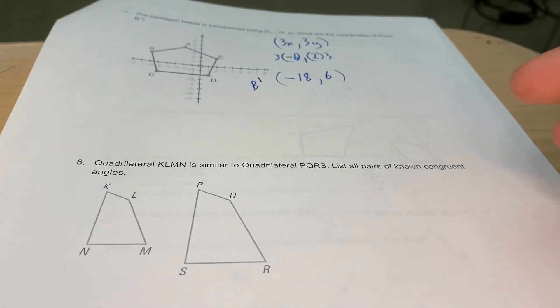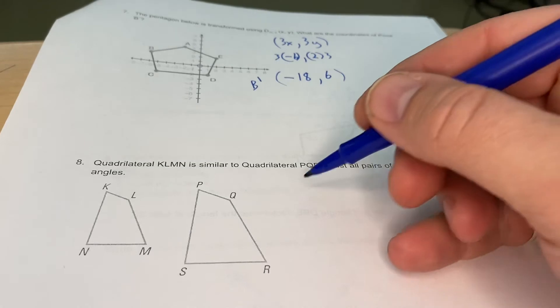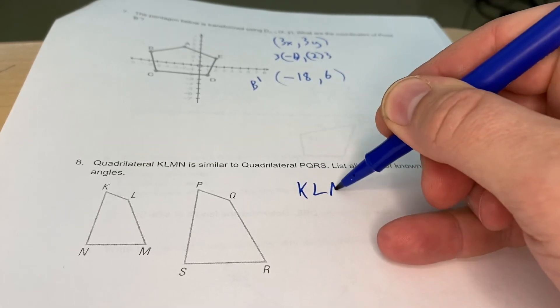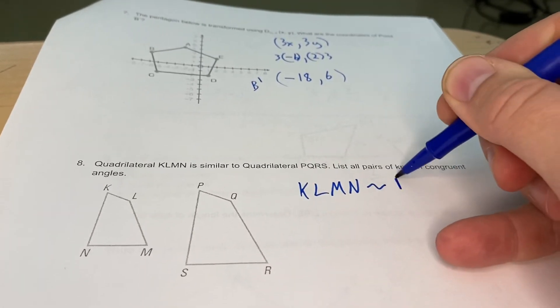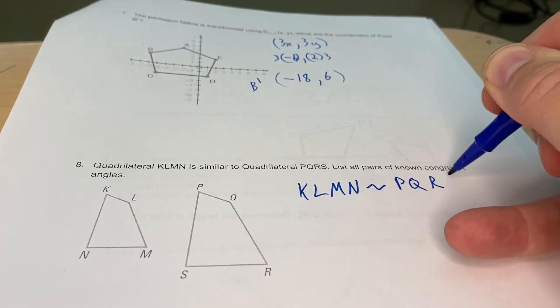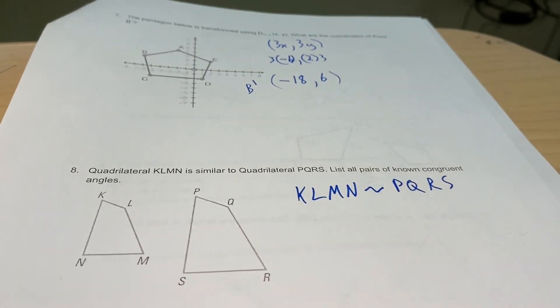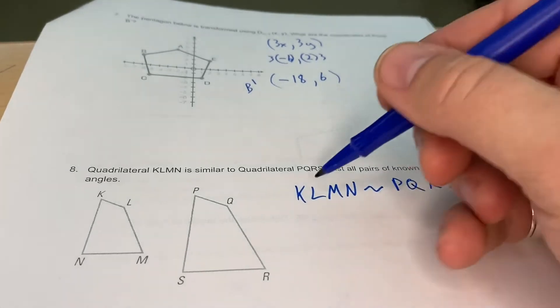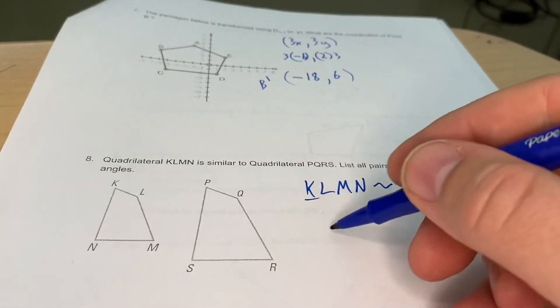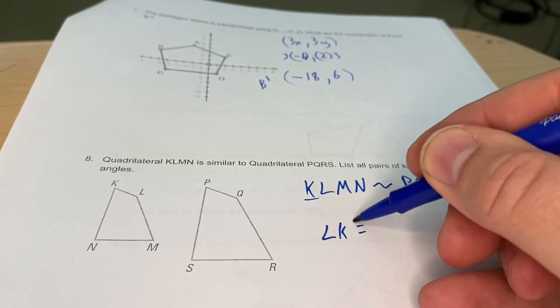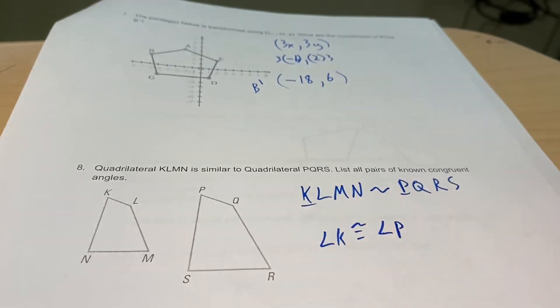Question number eight, quadrilateral KLMN is similar to quadrilateral PQRS. List all pairs of known congruent angles. So I'm going to go ahead and write this: KLMN similar to PQRS. Now I don't even need the pictures. If this is my similarity statement, the first one and the first one match up.